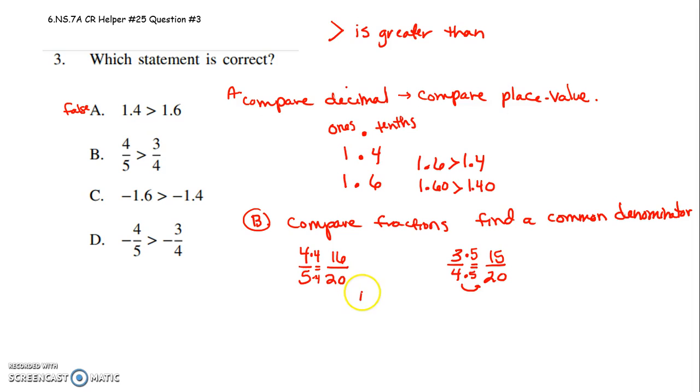Oh that's kind of nice. Four fifths says is greater than three fourths. So as soon as I found my common denominator this is sixteen twentieths is greater than fifteen twentieths. Once they have a common denominator I can just compare the numerator. Sixteen is greater than fifteen. So this is a true statement.